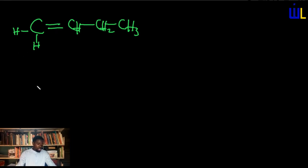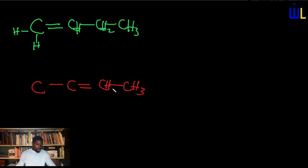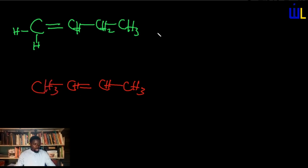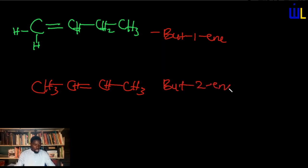If we happen to change it, let's move it to the second position and see what happens. This is referred to as but-1-ene, while this is but-2-ene.